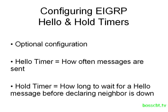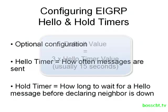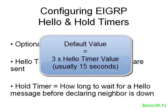The hold timer states how long a router is going to wait to receive a hello message from a neighbor before declaring it down, so it has to receive at least one hello message within that time, otherwise it thinks the neighbor's down.